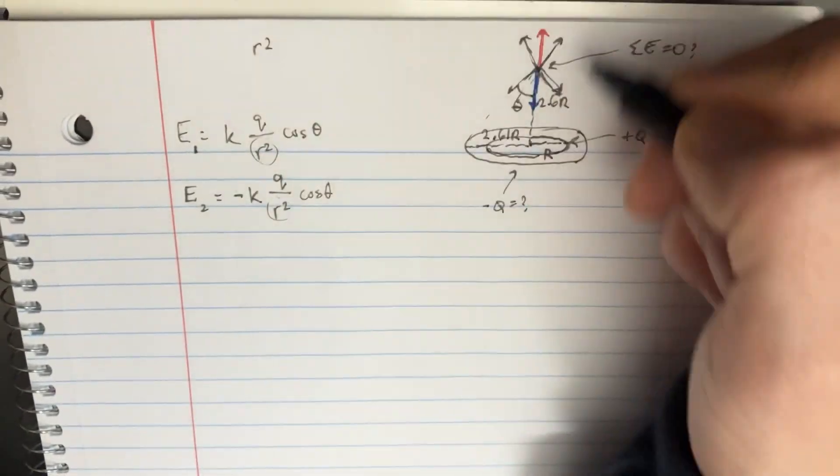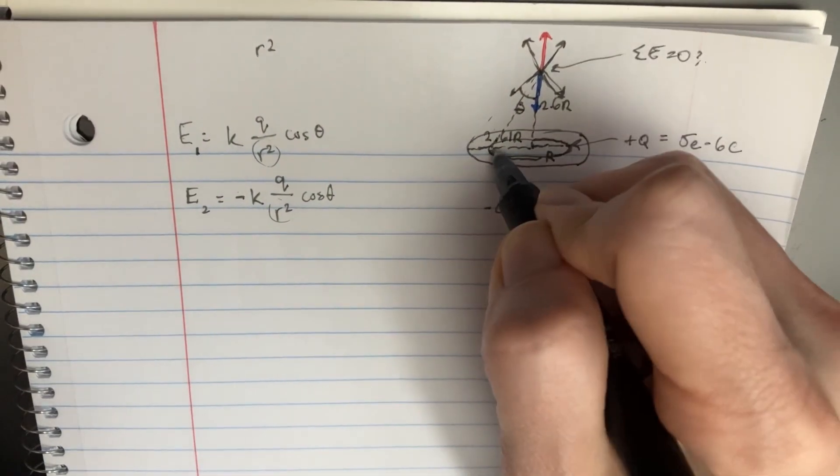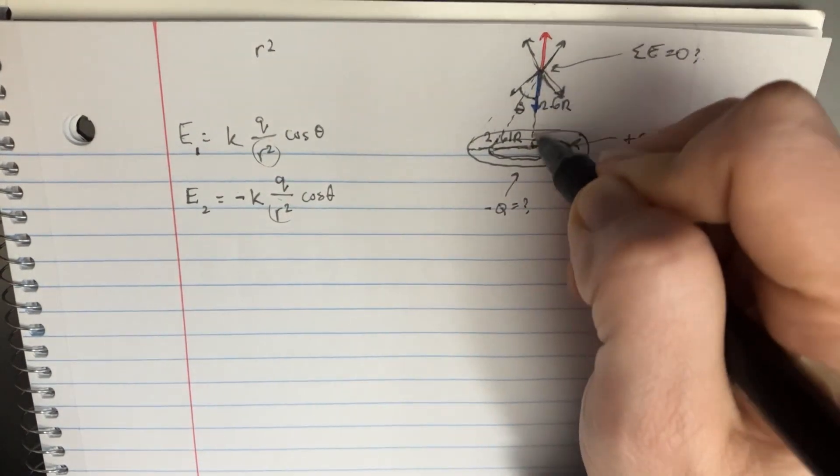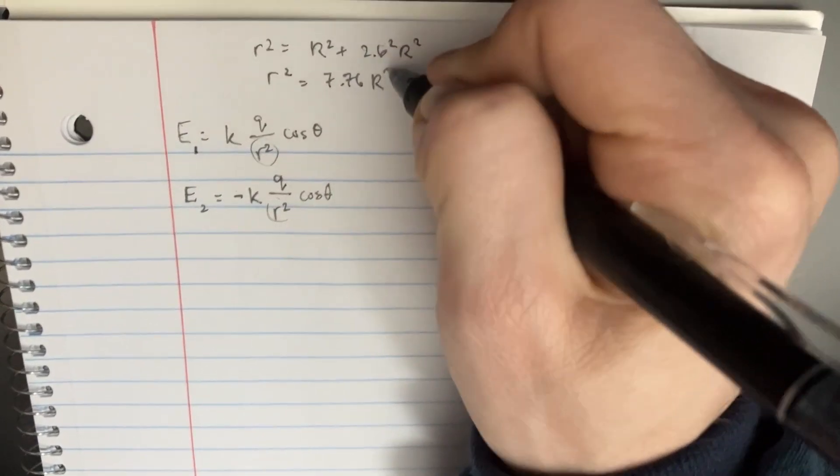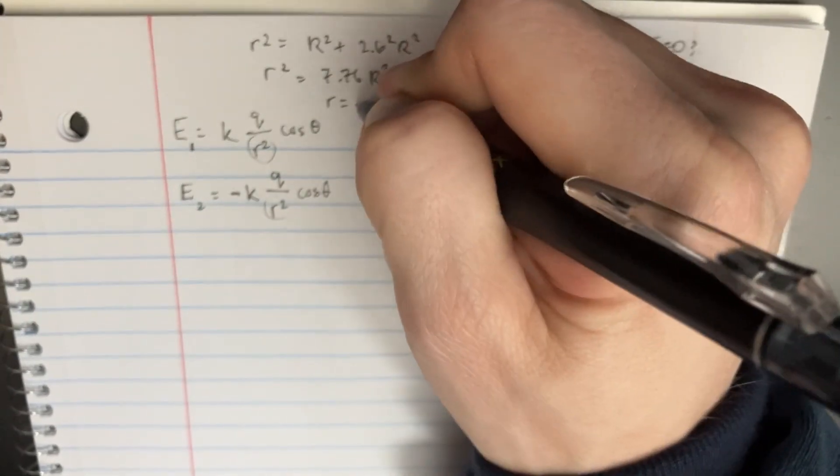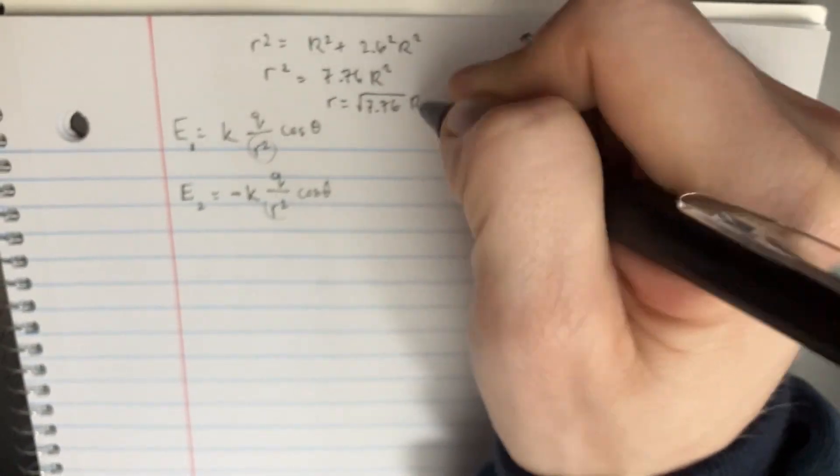We'll start with this positive, which is the smaller one. We got r and then the 2.6 r. So r squared plus 2.6 squared r squared. Kind of do all that, and then you get r squared equals 7.76 r squared. And so you get that the hypotenuse is equal to 7.76 r. Okay, so that's the hypotenuse, and that's r squared.